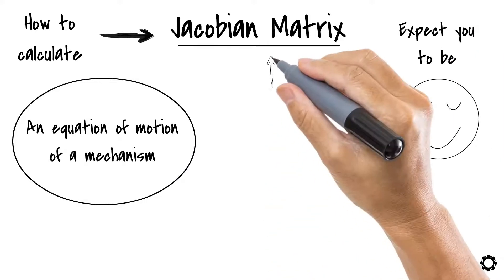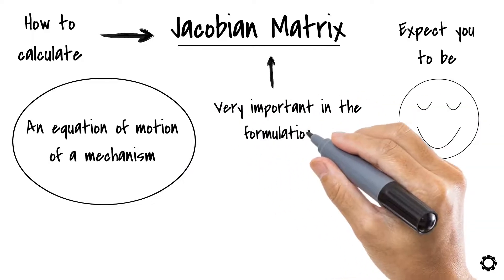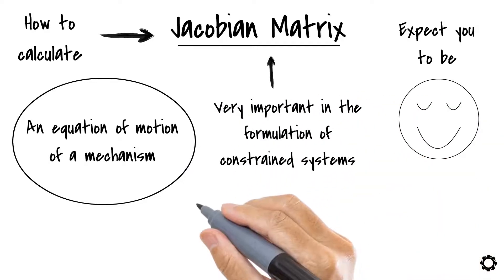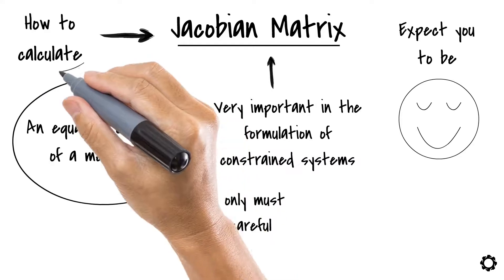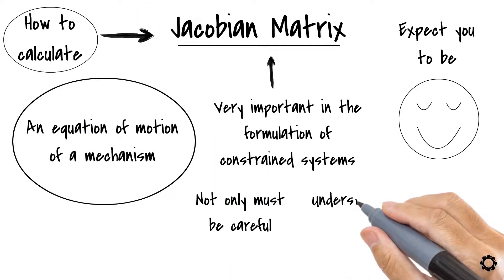The concept of a Jacobian matrix is very important in the formulation of constraint systems, and we not only must be careful with its calculation, but most of all understand what it is.